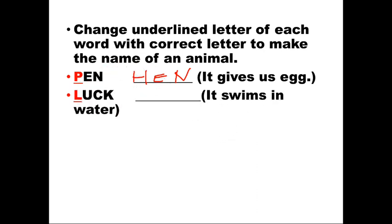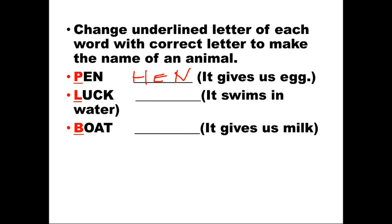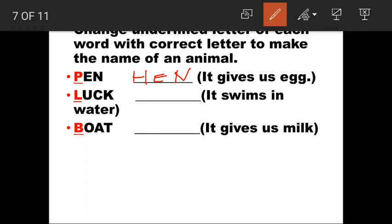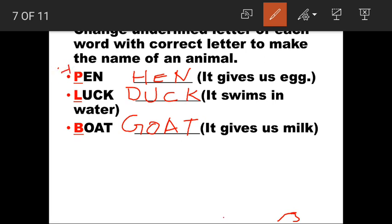Next word is 'luck' — L is underlined. Clue: it gives milk. Cow gives milk but that doesn't fit, buffalo doesn't fit either. The answer is Goat — change L to G, giving G-O-A-T. So P was changed to H, L was changed to D, and B was changed to G.